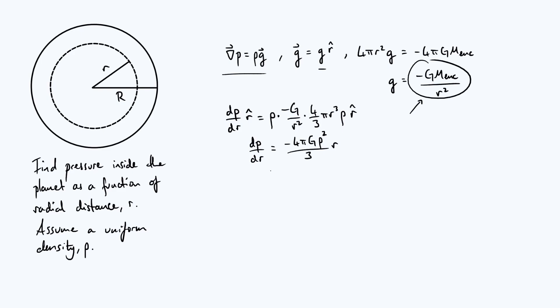Now all we have to do is integrate to undo the derivative on the left hand side. So the pressure is just going to be the integral of that stuff, minus 4πGρ² over 3r with respect to r. And we just use the power law, that's pretty easy to integrate.